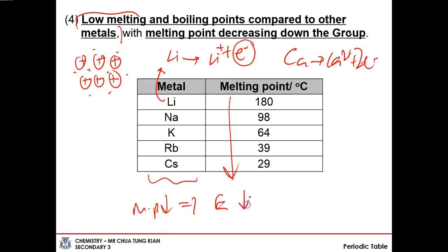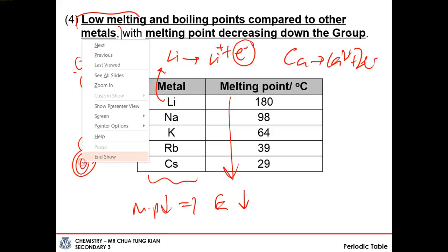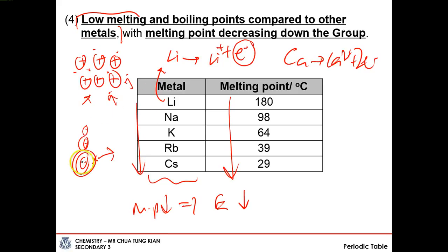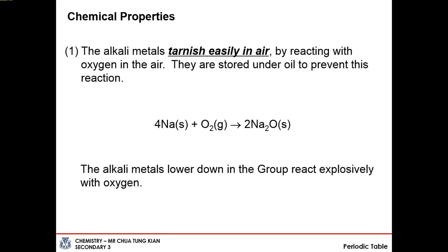All these topics link back to chemical bonding, so if your chemical bonding knowledge is not strong, please refer to the chemical bonding videos. Now let's look at some chemical properties of group 1 alkali metals. They tarnish easily in air because they react with oxygen very quickly. As reactivity increases down the group, the metals react explosively with oxygen — meaning very violent, vigorous, and fast chemical reactions. They also react vigorously with water to give alkaline solutions. The trend of reactivity with water goes: lithium reacts quickly, sodium reacts rapidly, and potassium reacts violently.